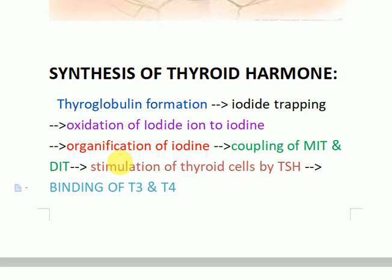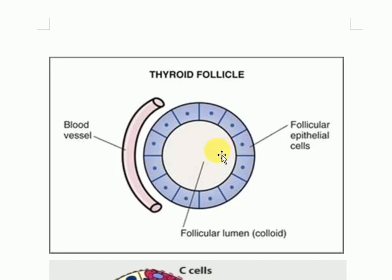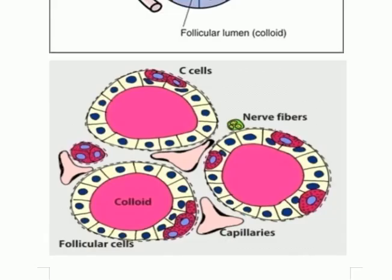To discuss it in detail, I will show you a diagram of the thyroid follicle. Thyroid follicles are present in the thyroid gland. These are the follicular epithelial cells of the follicle, and inside the follicle there is a lumen, also called the follicular lumen or colloid. Thyroglobulin formation takes place in the follicular epithelial cells from tyrosine, and is then packed into secretory vesicles and extruded out into the lumen.